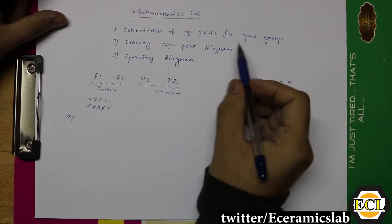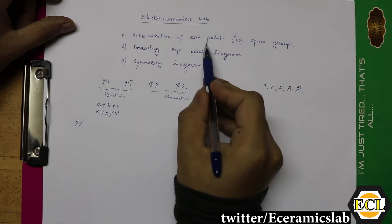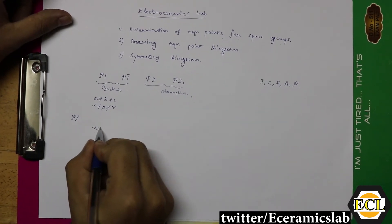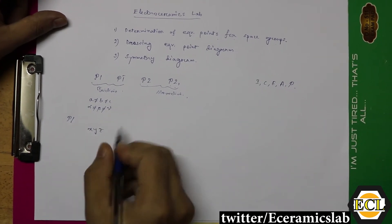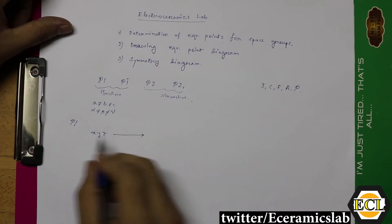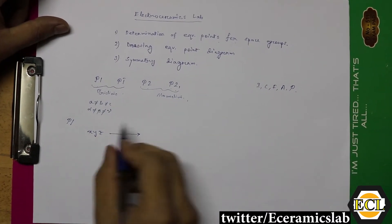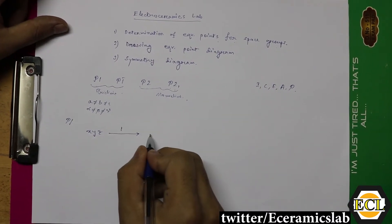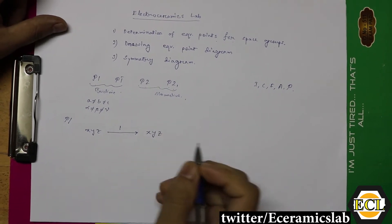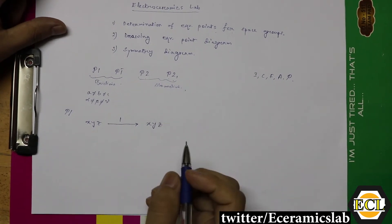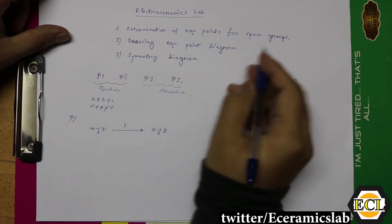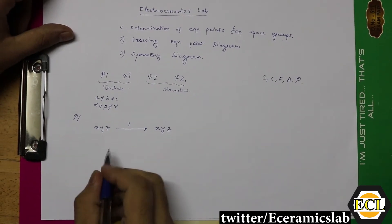In the P1 space group, to determine the equivalent point we consider one point XYZ and then apply the symmetry operation of the space group, which is 1. The resultant point we get is XYZ. So there is only one equivalent point.